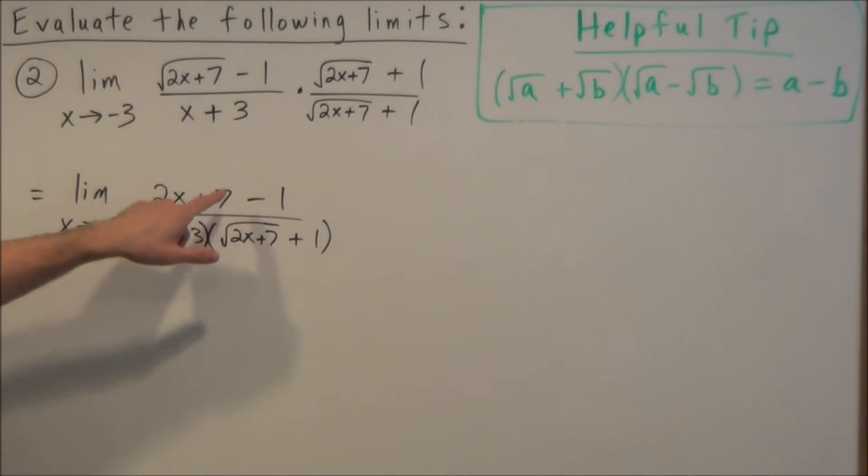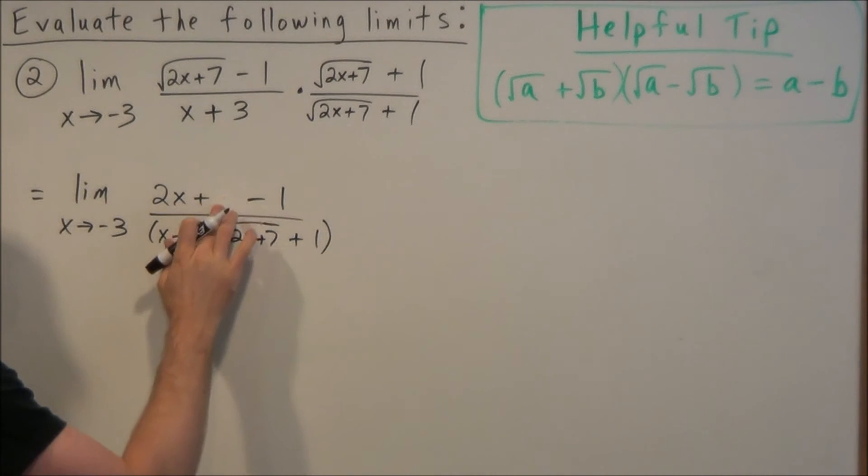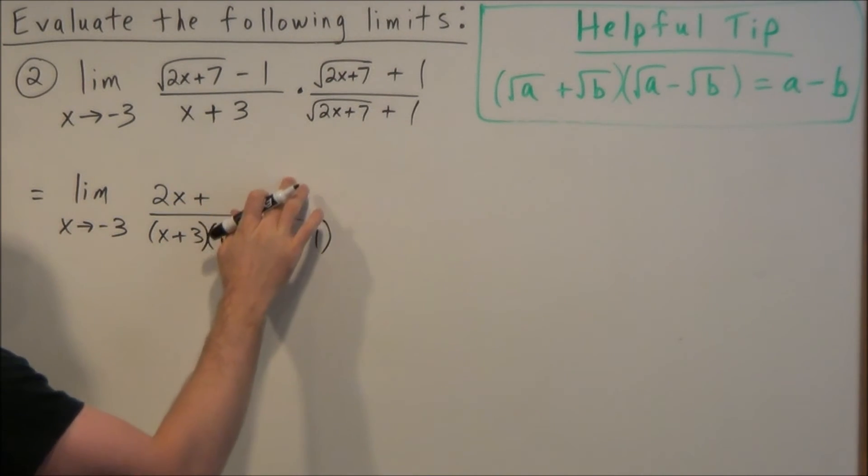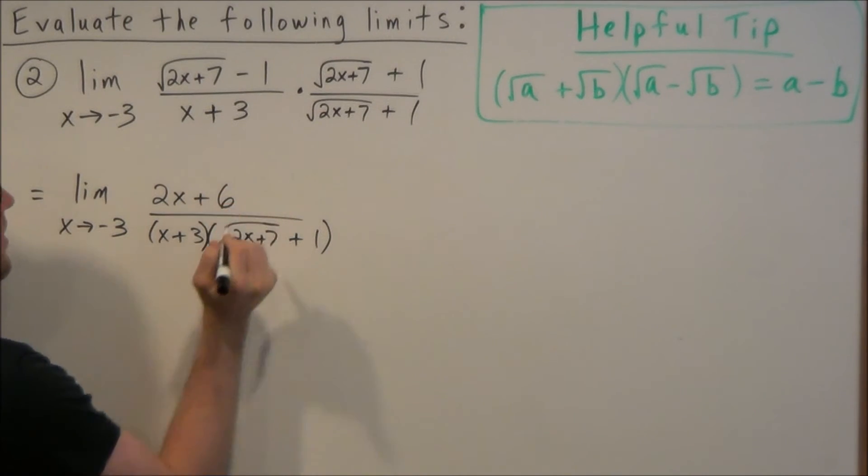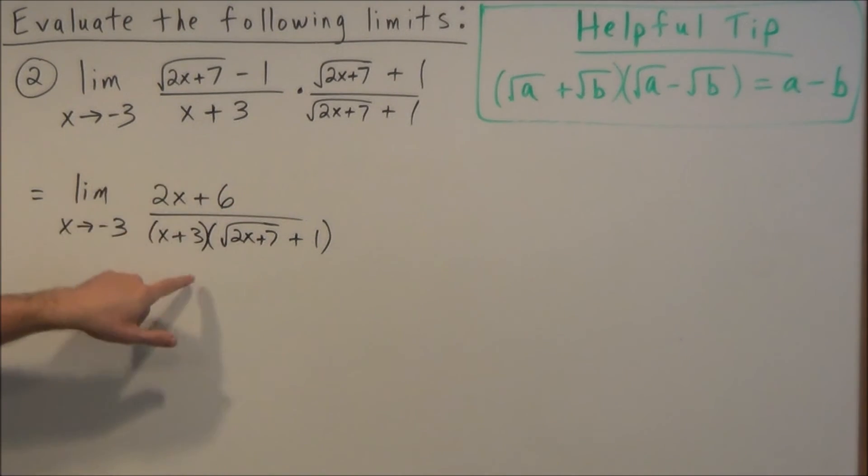So then at this stage here, this is just going to give us 2x plus 6, so we could go ahead and combine like terms here. 7 minus 1 is equal to 6. And then at this stage, notice you may say, initially you may say nothing is going to cancel, but notice if we factor out a 2 from 2x plus 6, we're going to have 2 times x plus 3, which then will cancel this factor down here.